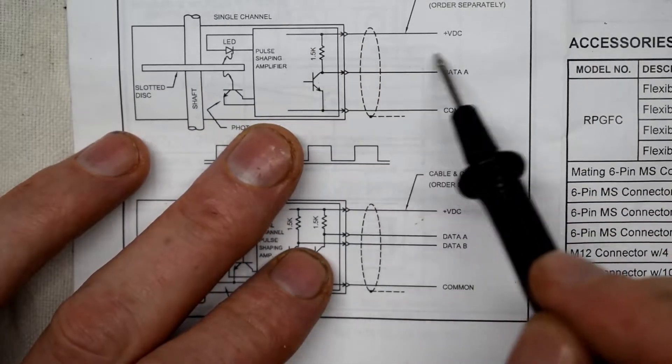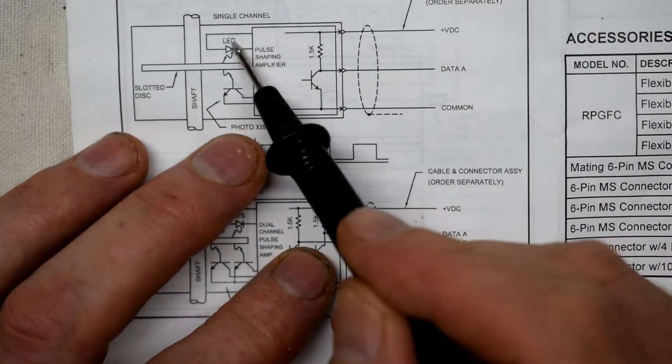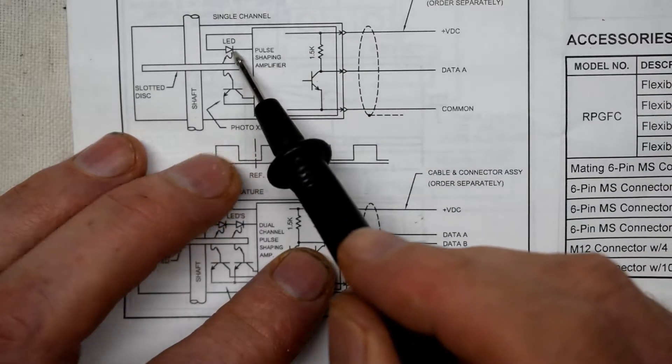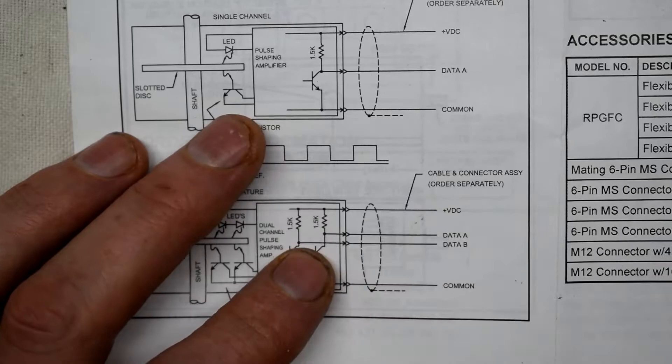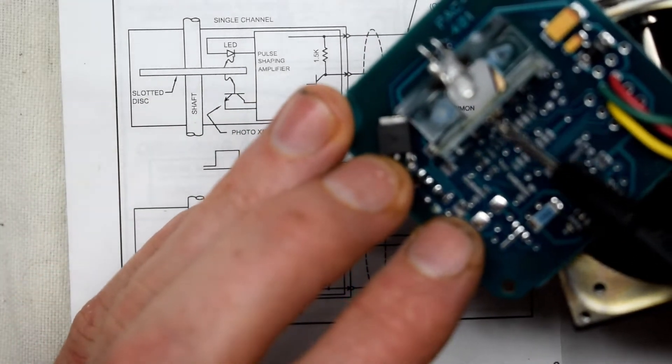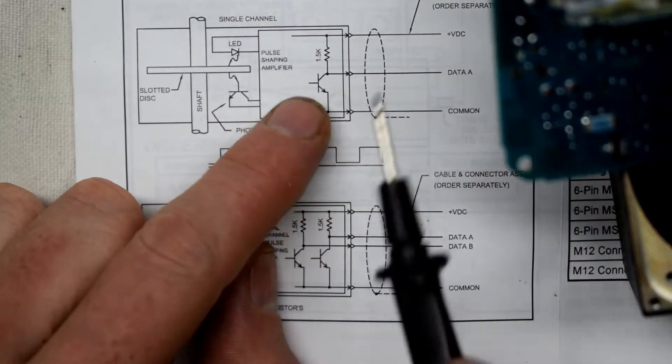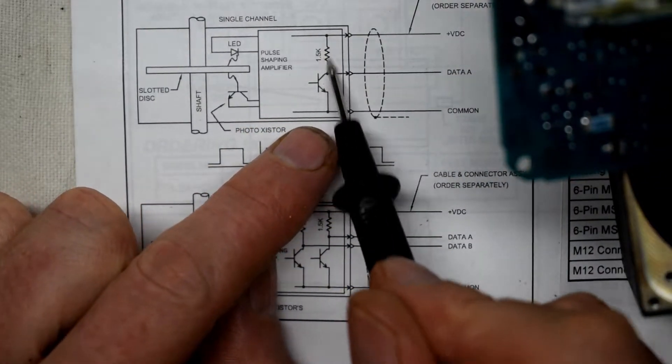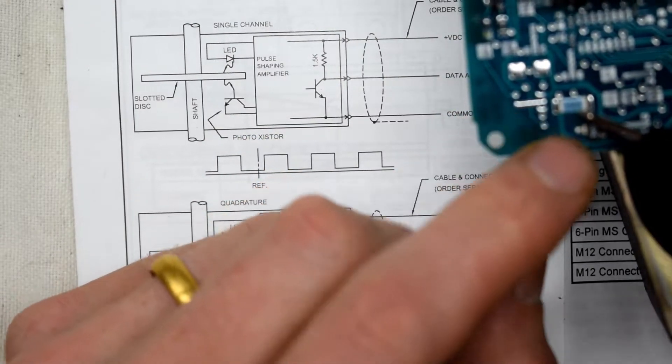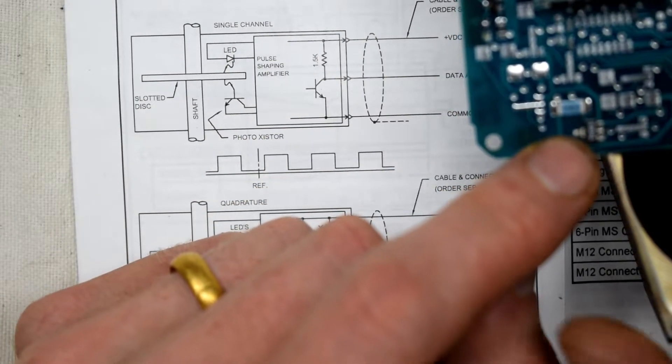And this is the schematic. You can see VCC connects right to the positive of the LED. And then we have a phototransistor. This guy is the phototransistor here. It goes through a 1.5k ohm resistor. This is the bottom. You have a 1.5k ohm resistor.